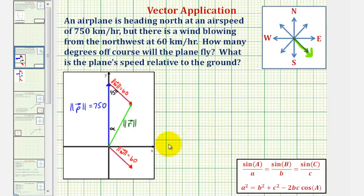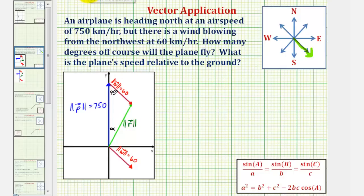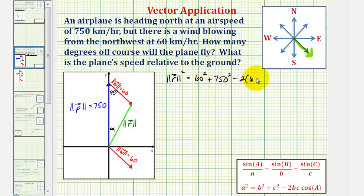We should recognize this, because notice how we know this angle here, and we also know the length of the two sides that form this known angle. Applying the law of cosines, side a would be opposite angle a, and sides b and c form the known angle. So the magnitude of vector r squared equals 60 squared plus 750 squared minus 2 times 60 times 750 times cosine of 45 degrees.